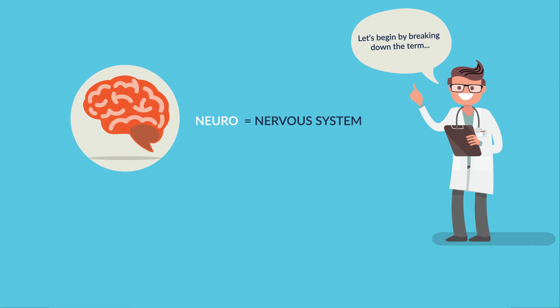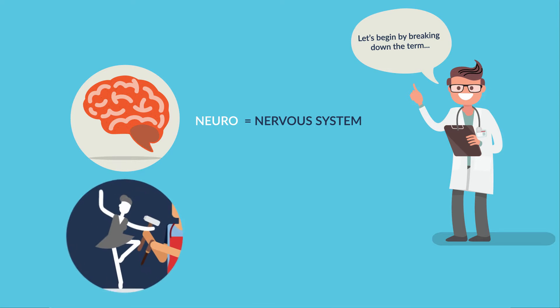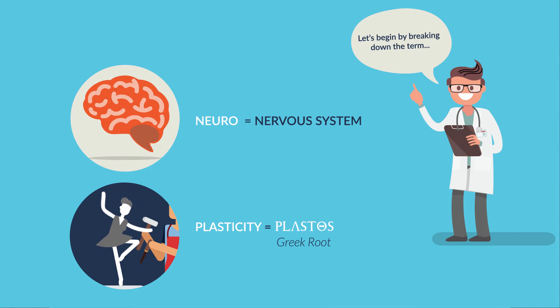If you break down the term neuro, it means nervous system, which consists of the brain, spinal cord, and all the nerves that send and receive information to and from the brain. And plasticity, which comes from the Greek word plastos, meaning moldable. So together, neuroplasticity means a moldable brain.